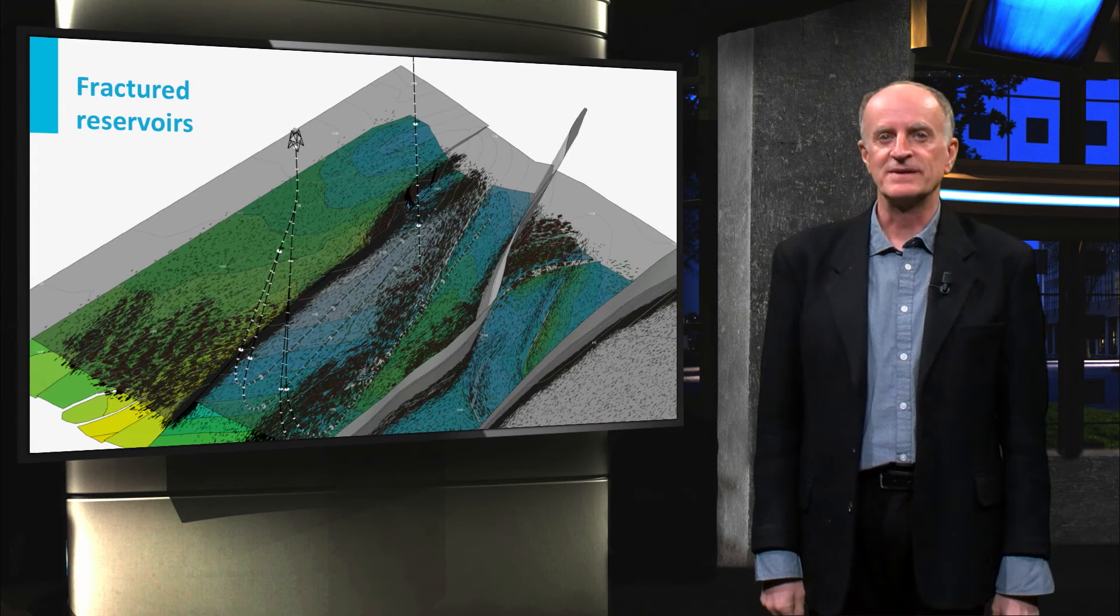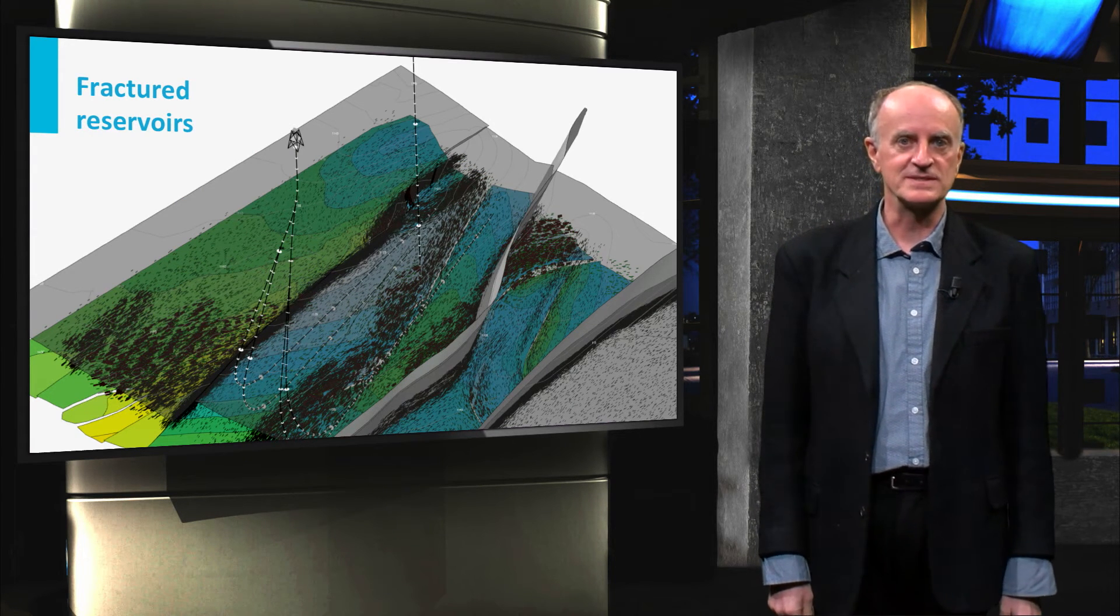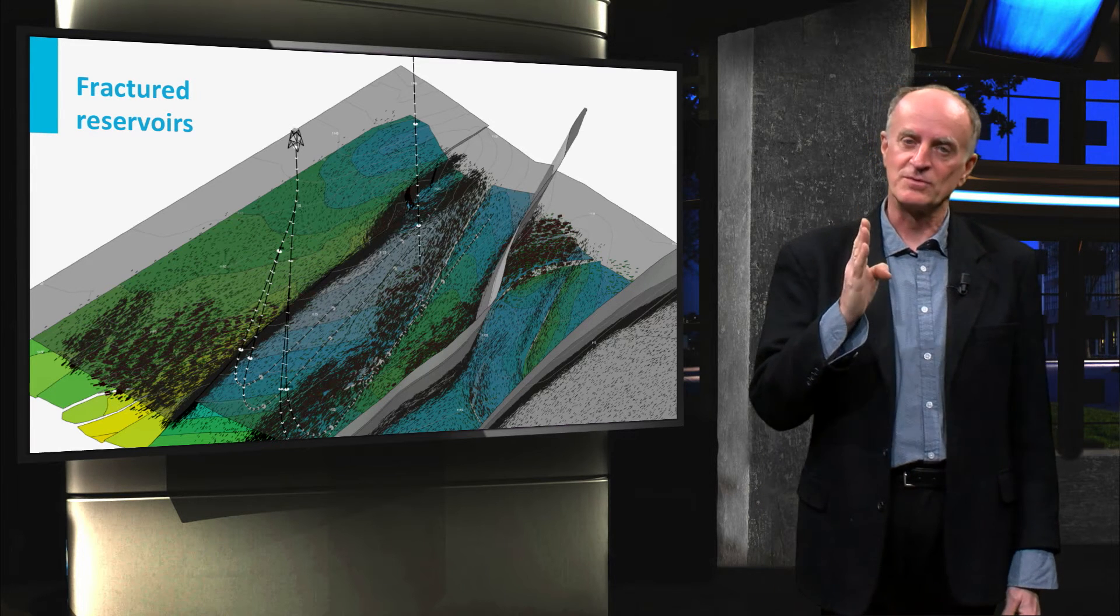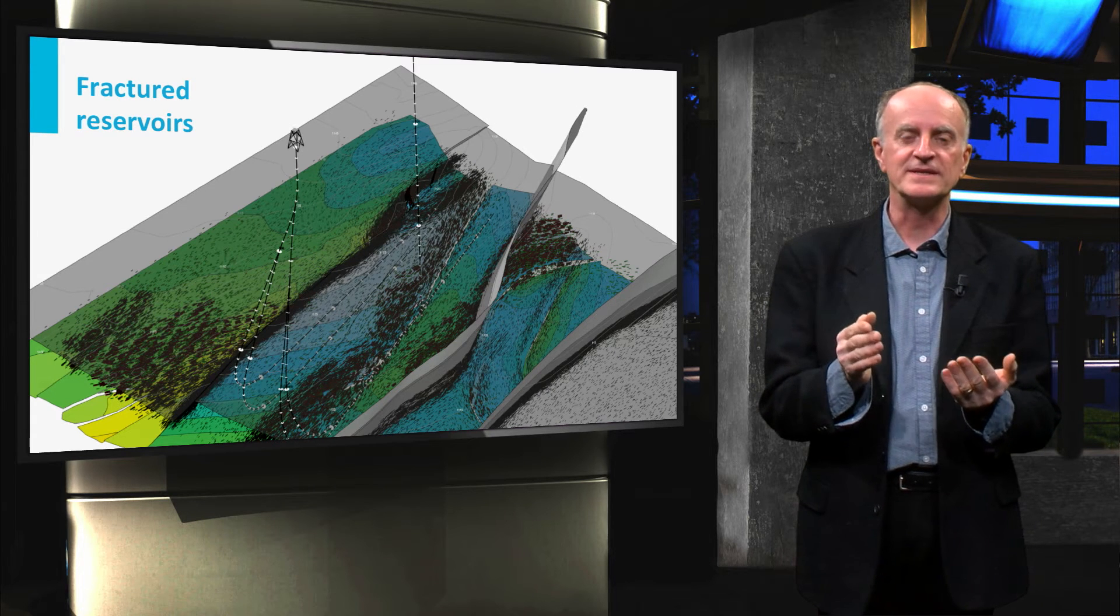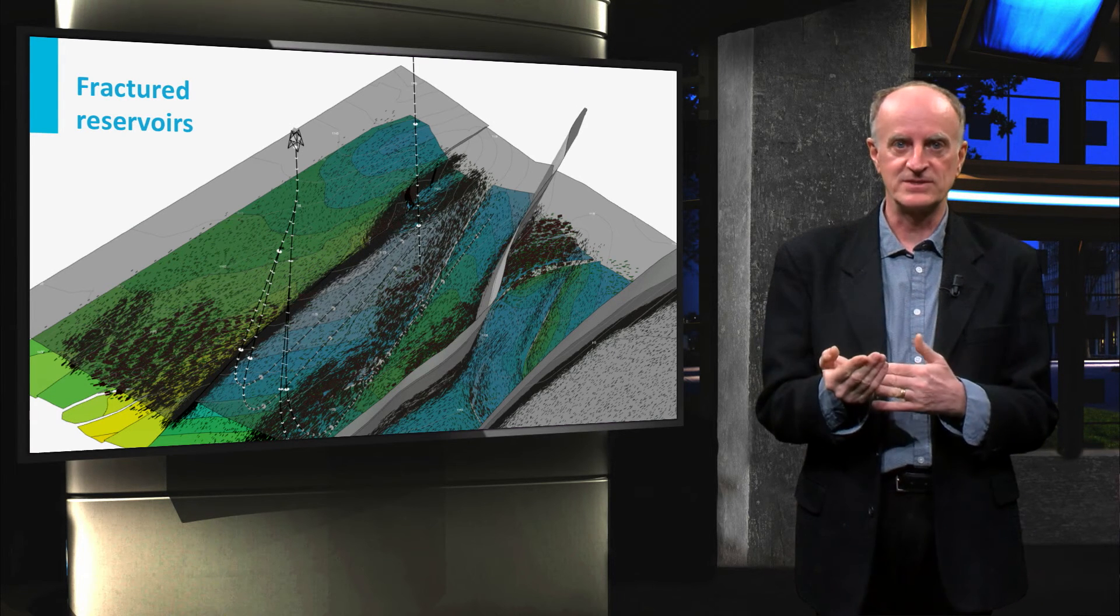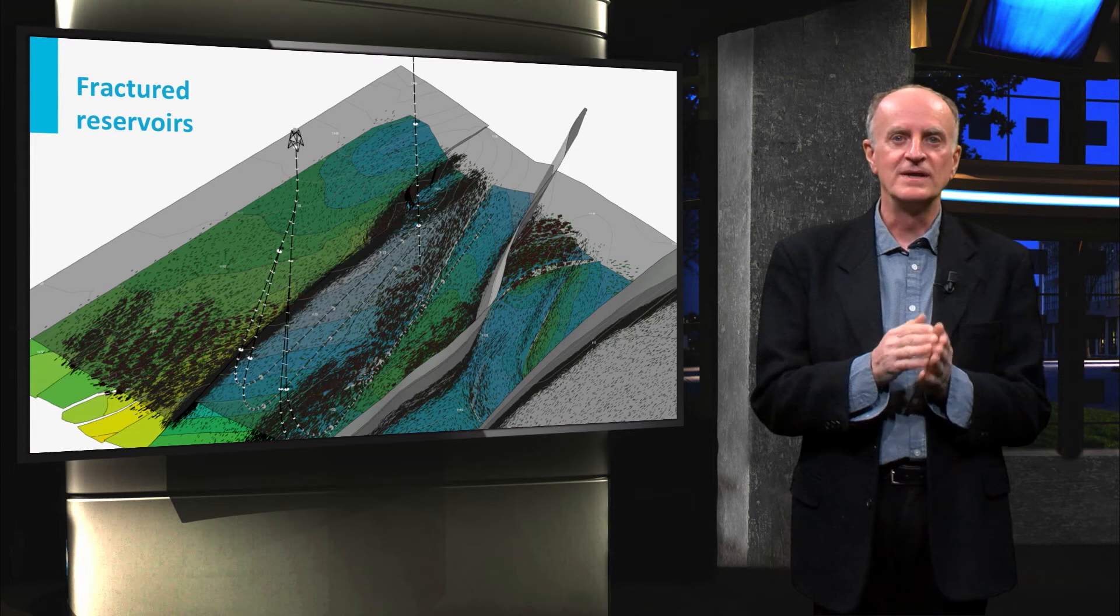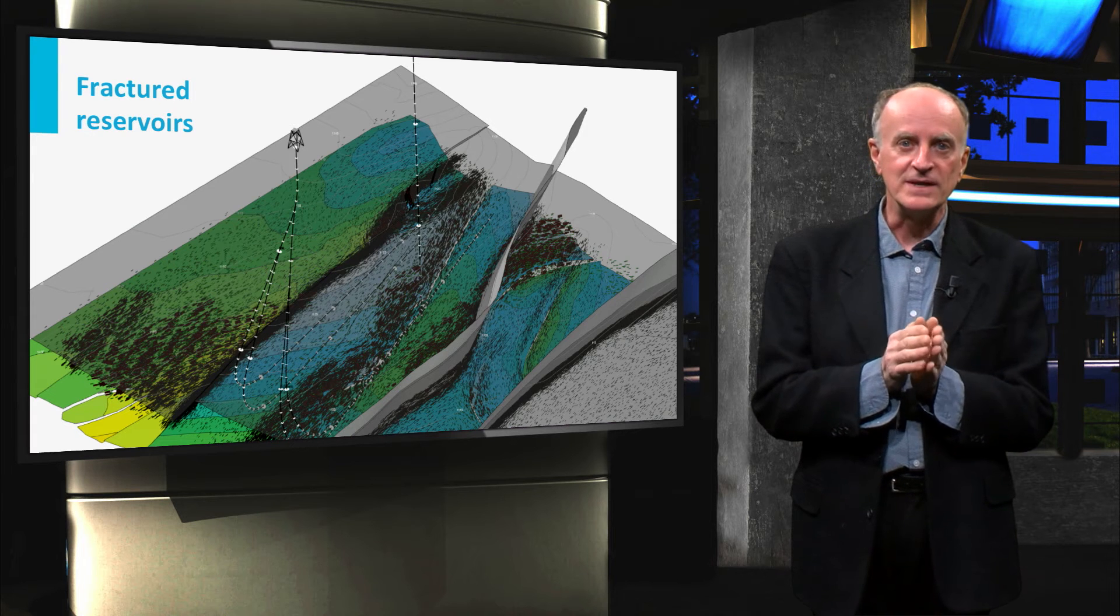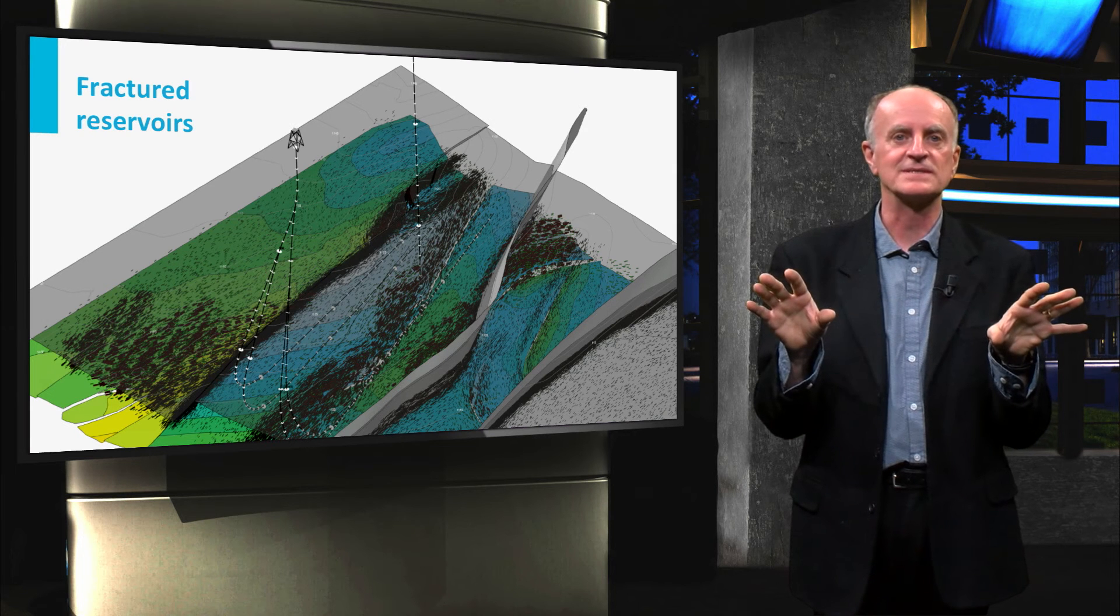In the previous slides, we have looked at reservoirs where the porosity is associated with sedimentary processes. In fractured reservoirs, permeability is controlled by the distribution of fractures. Models are created predicting the distribution and geometry of these fractures. In the slide, predicted fractures are all the thin black lines. As you think that only control points are the boreholes, you can imagine how full with uncertainty this process is.